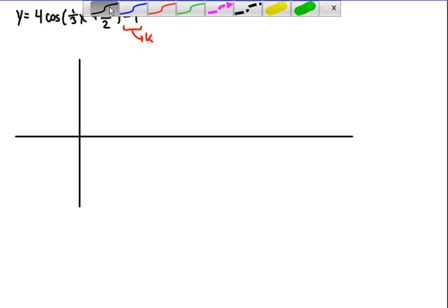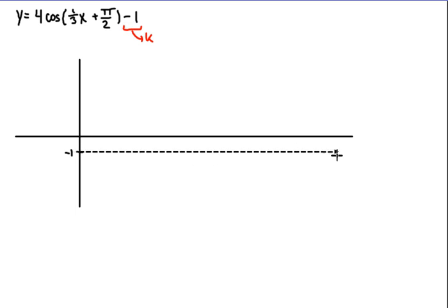To get us started with that, we'll want to draw in our midline, which will be shifted down from the equation y equals 0 to y equals negative 1. So we can sketch that midline into the dotted line, and it can be our new middle value on our cosine graph.